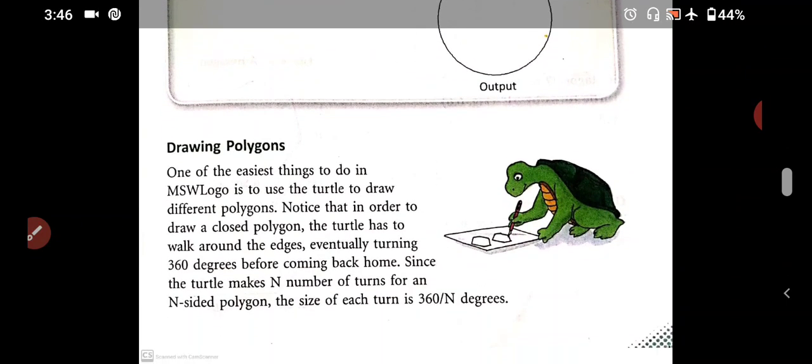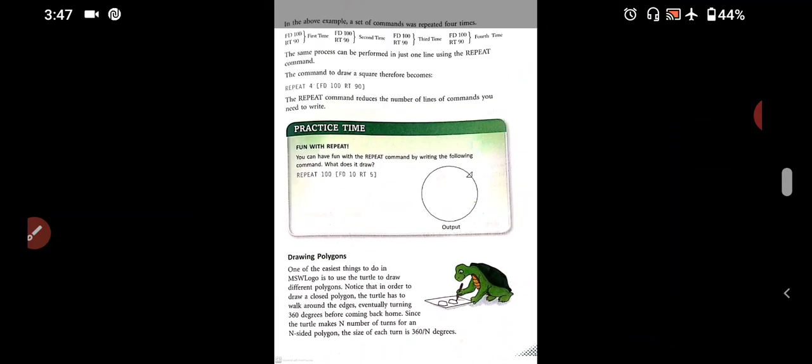After drawing polygons. One of the easiest things to do in MSW logo is to use the turtle to draw different polygons. Polygons use and make figures in the logo is very easy. Notice that in order to draw a closed polygon, the turtle has to walk around the edges. The turtle has to turn 360 degrees before coming back home.